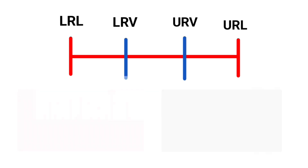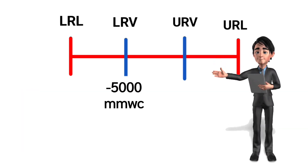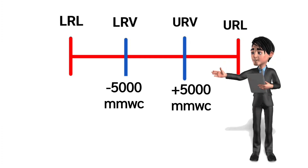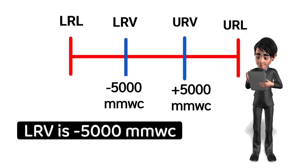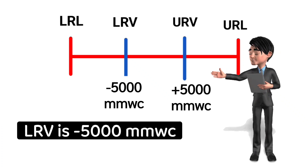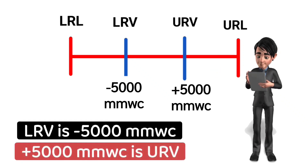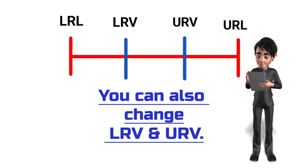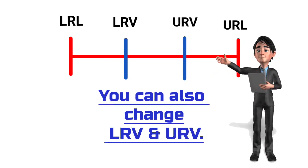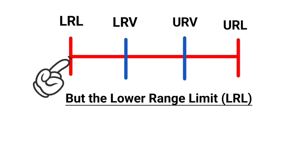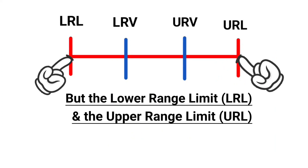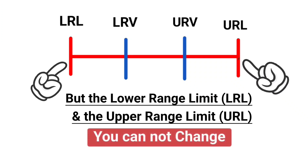Like, for minus 5000 mmWC to plus 5000 mmWC, LRL is minus 5000 mmWC and plus 5000 mmWC is URV. You can also change LRV and URV, but the Lower Range Limit LRL and the Upper Range Limit URL — you cannot change them.